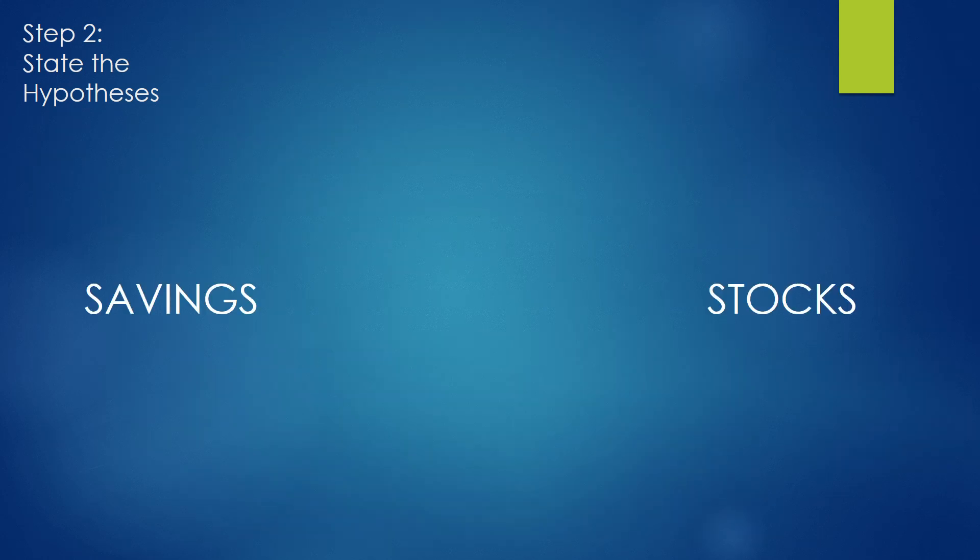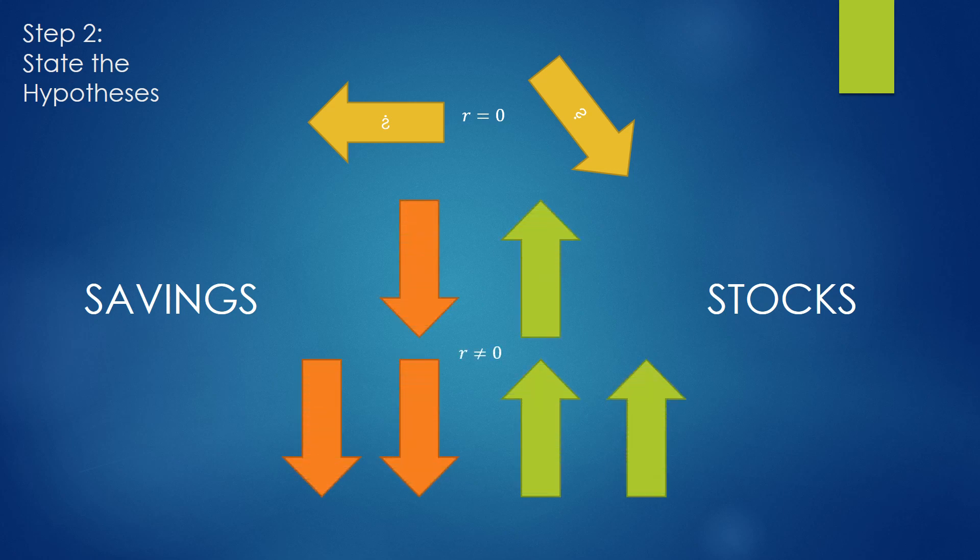For this presentation, we're going to explore the correlation, if any, between savings and stocks. Our null hypothesis is that changes in one do not affect changes in the other. The alternative hypothesis says something like, well, if one goes up while the other one goes down, or if they go up and down in unison, r is not equal to 0.